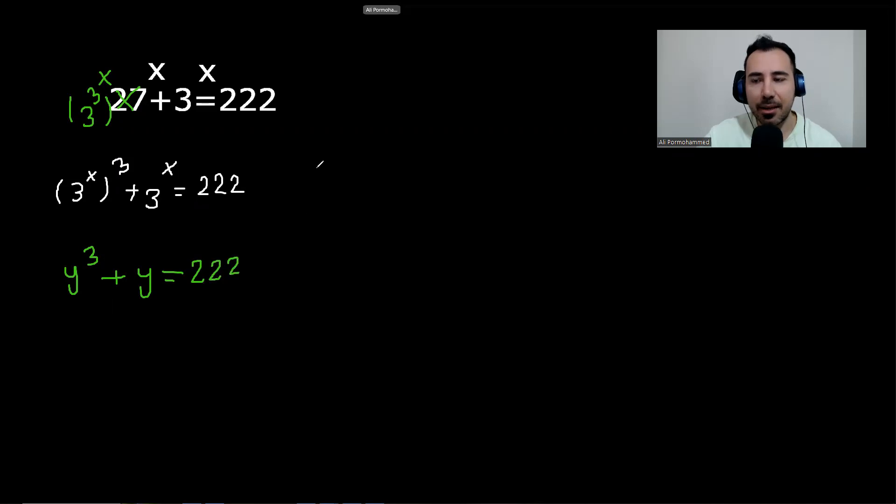Now how to solve this? Again, we always try our luck. Let's see if we can guess the value of y. If y is 5, this term would be 125, the other term would be 5, 130, not enough. Now let's see, if we try 6, this would be 216 plus 6. So 6 is one of the answers to this equation. We need to check if there are any more answers.